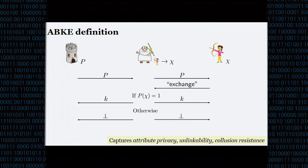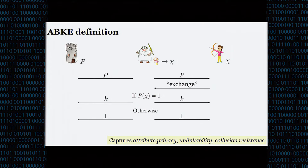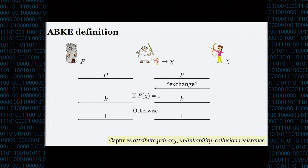This captures the three notions we want. It captures attribute privacy in the sense that the server never sees the attribute vector of the client — all it sees is the result of the key exchange. Unlinkability is handled by the fact that the client never sends any identifying information to the server. And collusion resistance holds because the trusted third party maintains the mapping, so the decision is based on the mapping known to the trusted party, not on any attribute vector provided by the client.